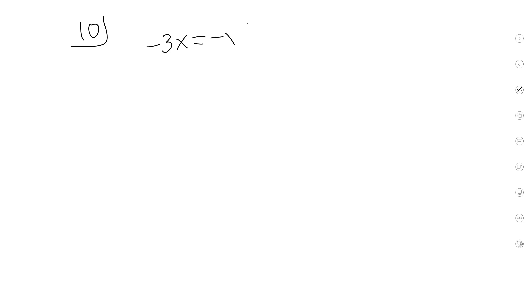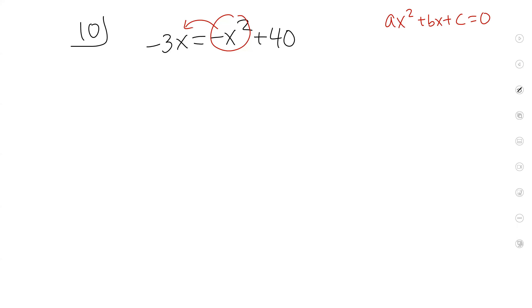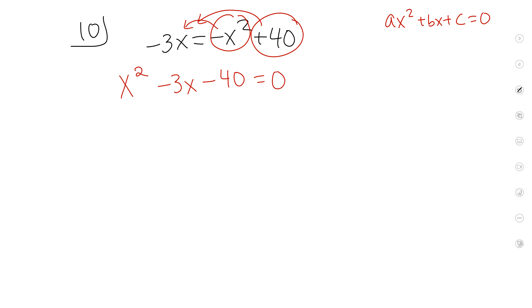Let's choose number 10 off your page. First question: is this in standard form? Standard form looks like ax² plus bx plus c equals zero. It's not in standard form, so we need to put it in standard form before we start. We need to move terms over so it becomes x² minus 3x minus 40 equals zero.